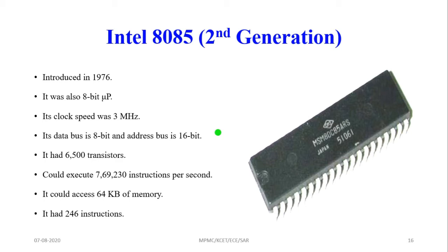The Intel 8085 is a second generation microprocessor, introduced in 1976. It is an 8-bit microprocessor with a clock speed of 3 MHz. It contains an 8-bit data bus and a 16-bit address bus, with 6,500 transistors inside the single chip. It can execute 769,230 instructions per second, access 64 kilobytes of memory, and has 246 instructions.